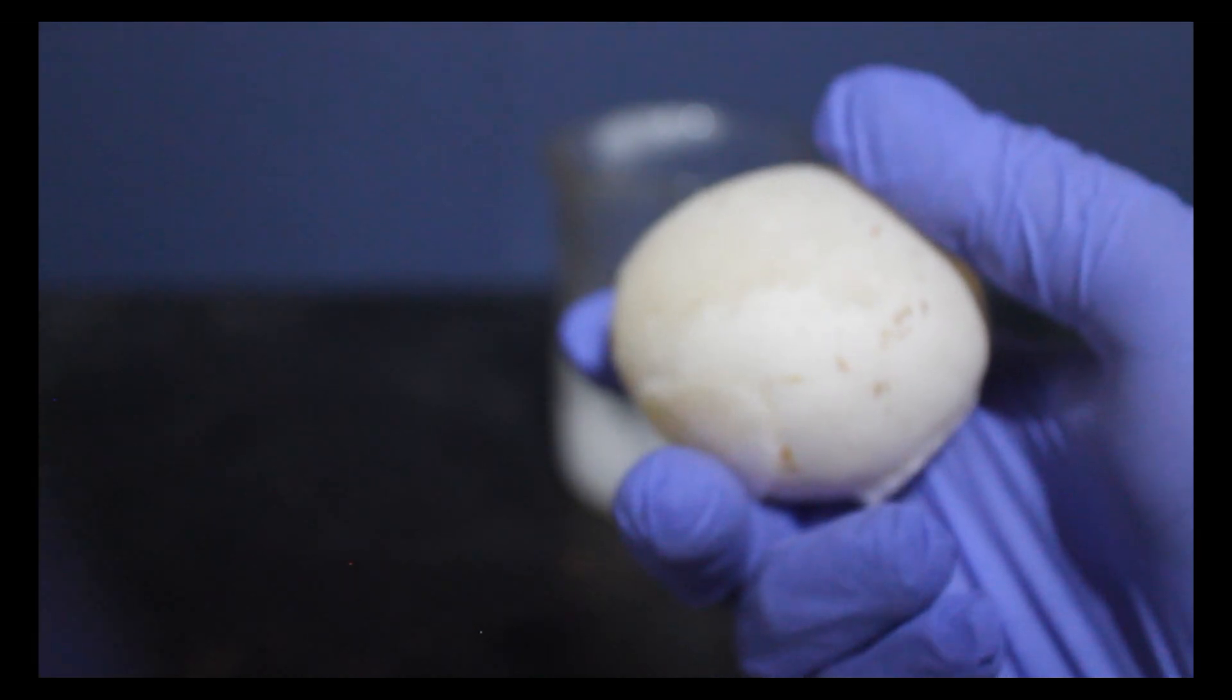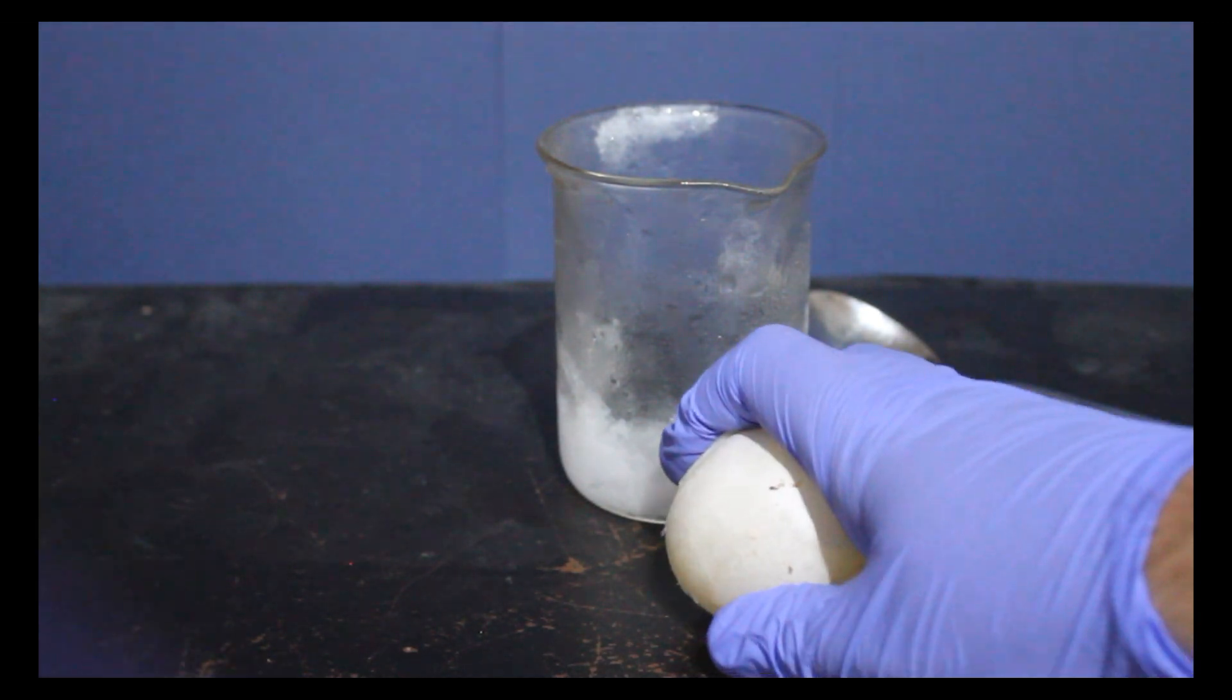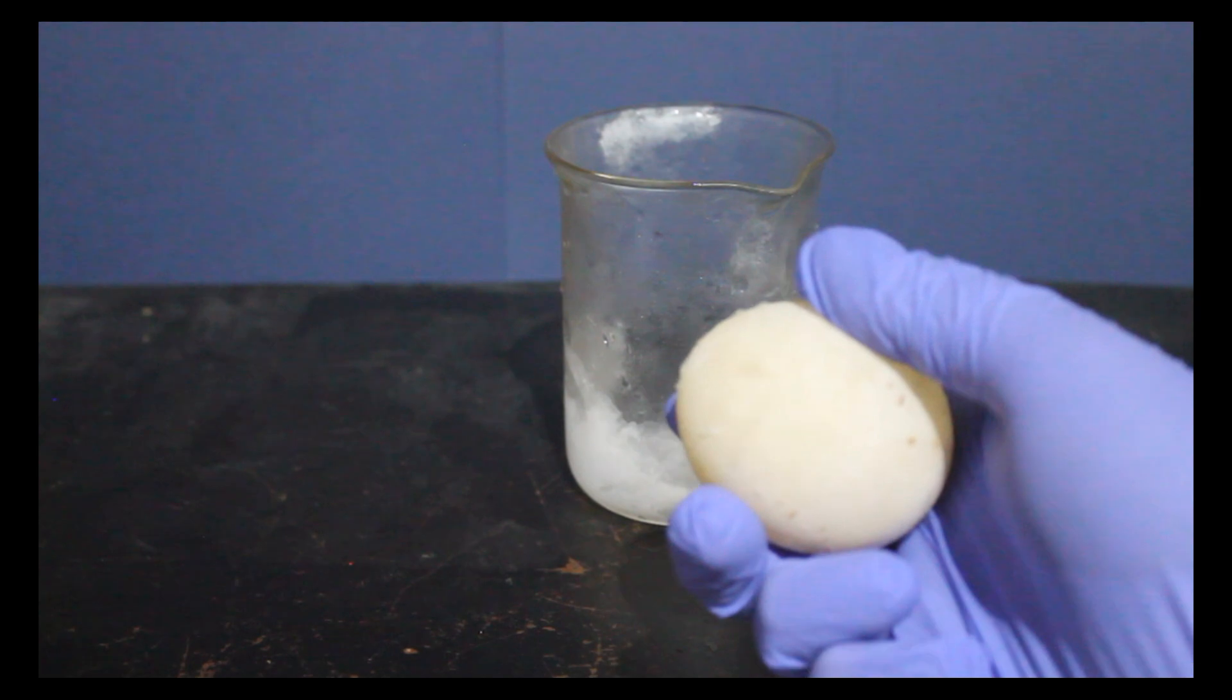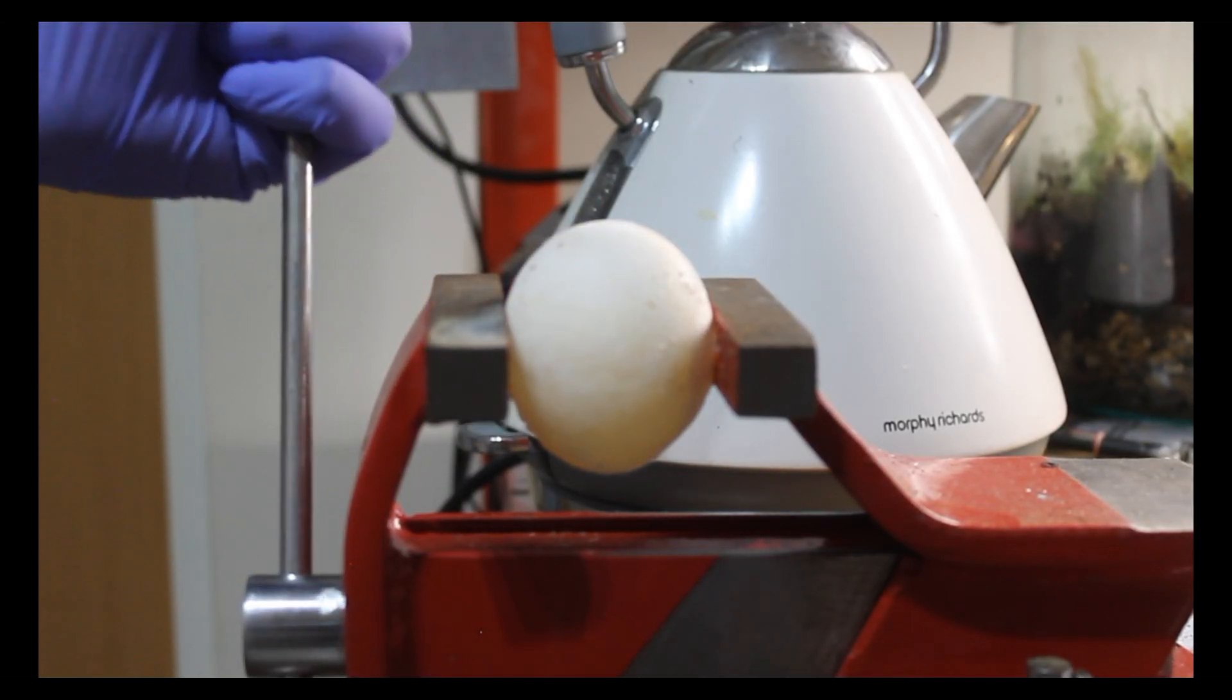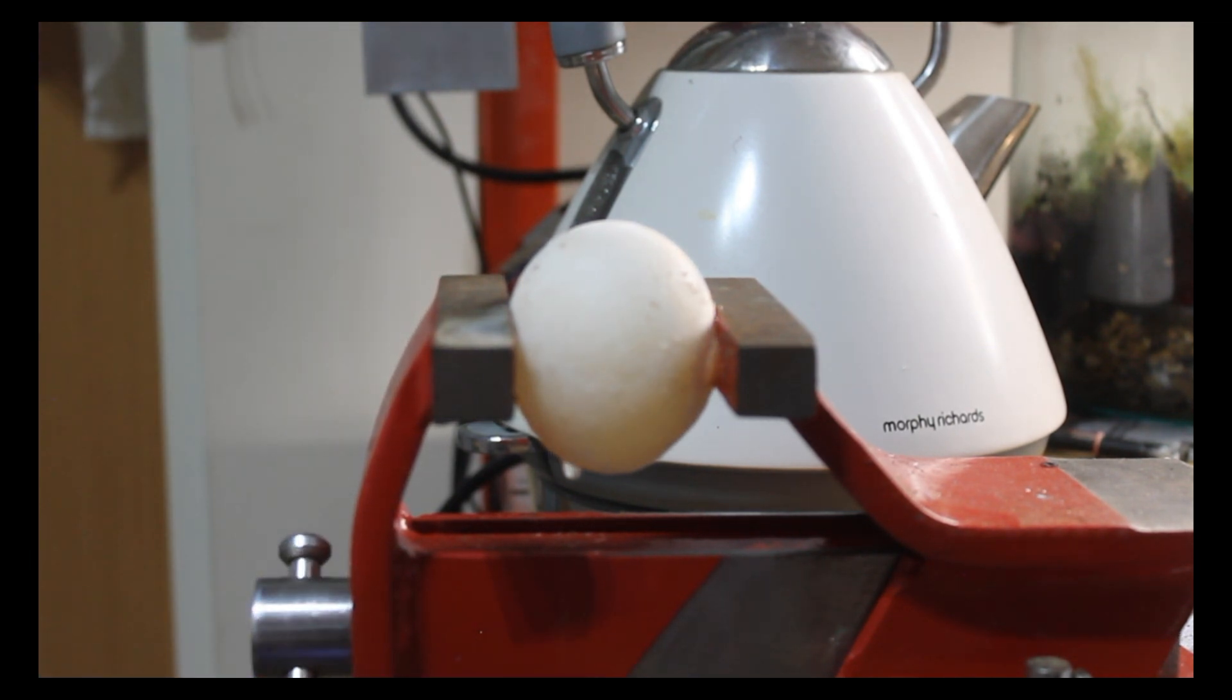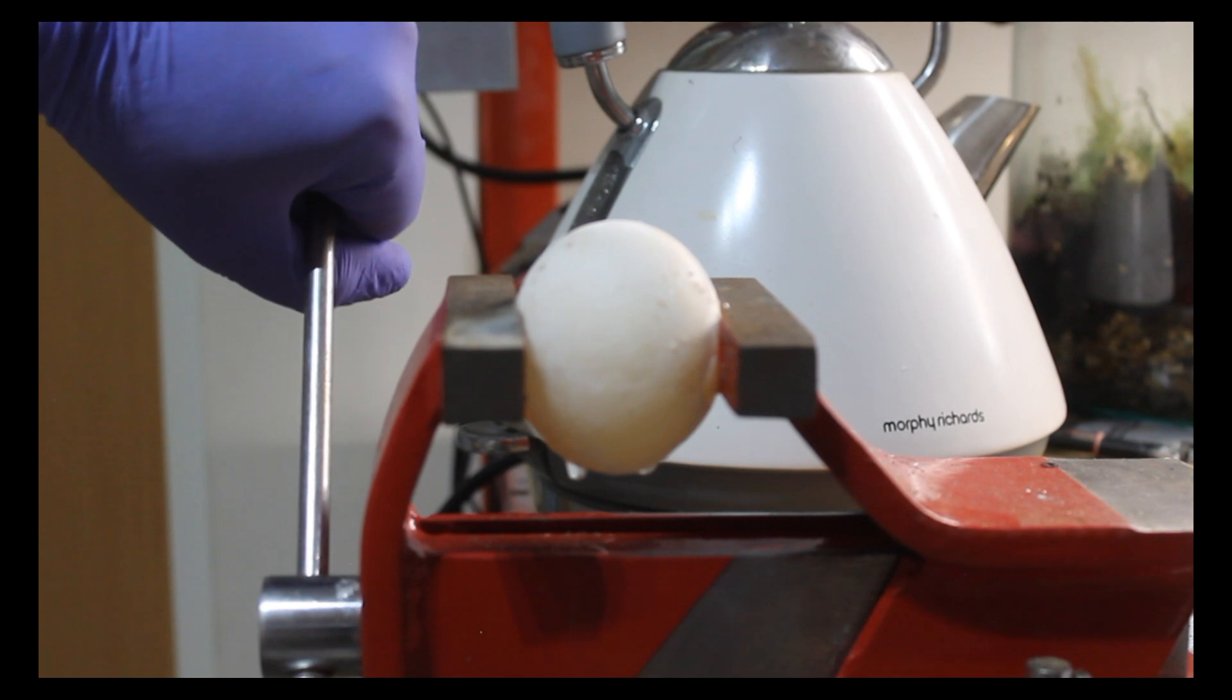But to really test this we are going to need to crack it open. Clearly using a table is not going to work for this, so we're going to use a heavy-duty method. The egg has been placed within our workbench vise and we have opted to crush it to see the interior.